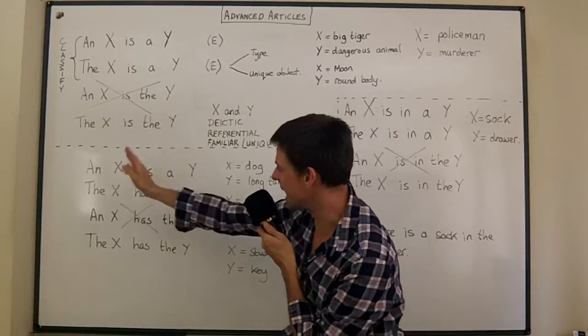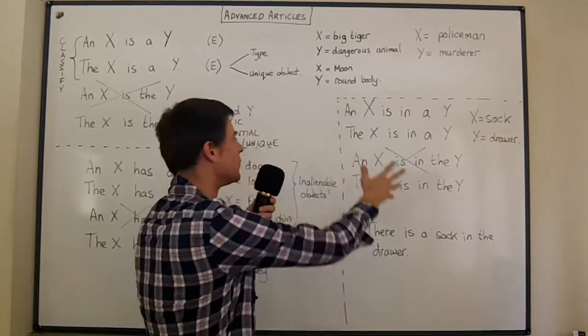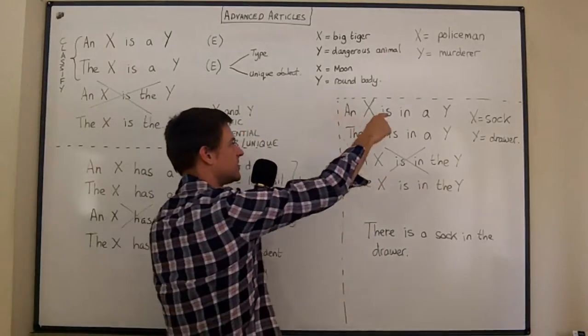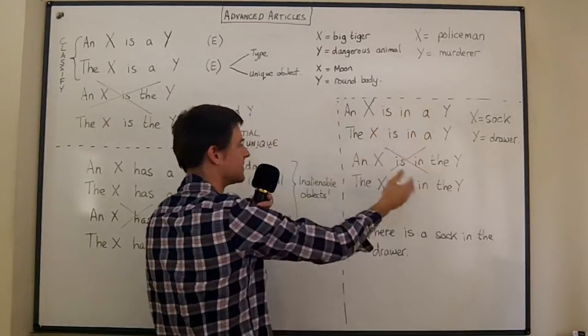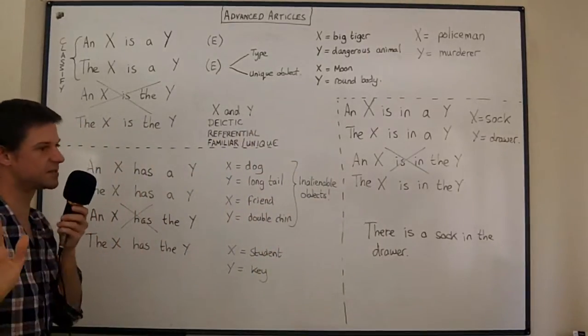For here which is just X has Y with different articles. And for here which is just X is in a Y, so it's a prepositional phrase with to be with different articles. And I hope to show you that there's a pattern here, there's something to be learned.